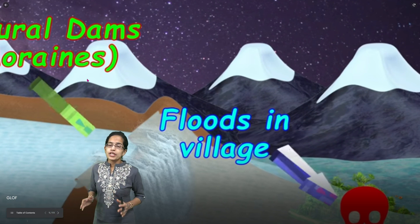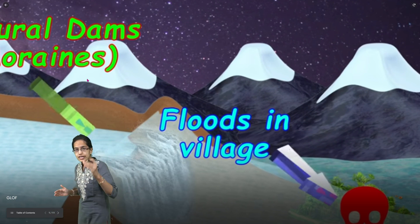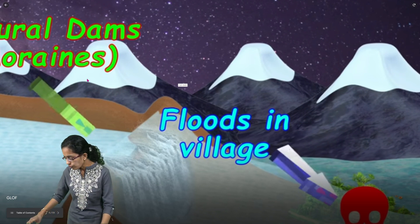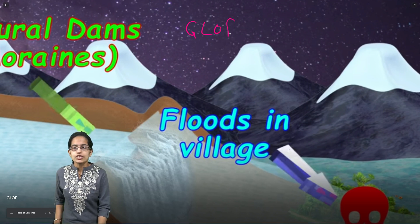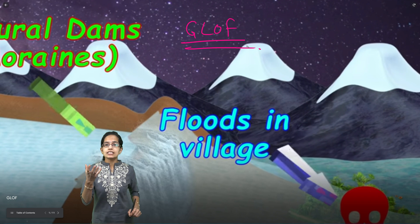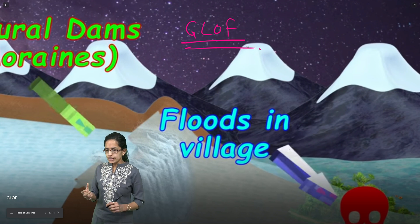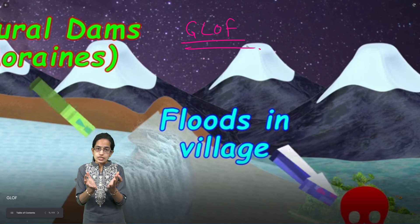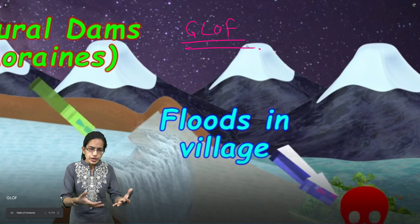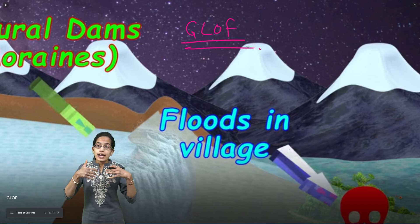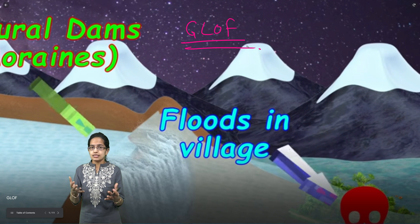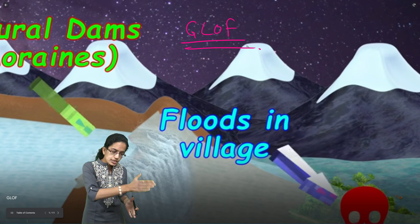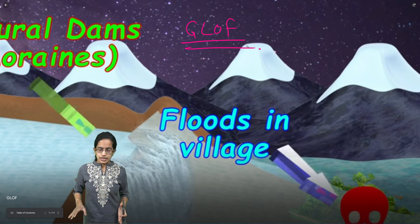The event that happened in Chamoli today is one of the very threatening events due to environmental issues, and we call it GLOF — Glacier Lake Outburst Flood. Whenever we talk about GLOF, it is very important to understand how the lakes that are made by glaciers are not sustainable when there are severe earthquakes, avalanches, or increased atmospheric pollution, and finally this leads to an outburst flood with significantly affected downstream regions.